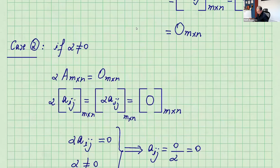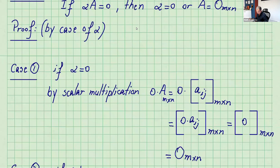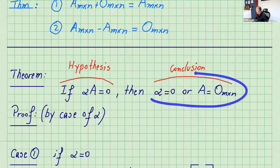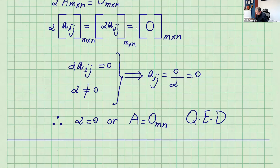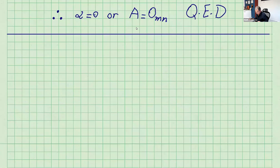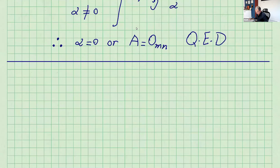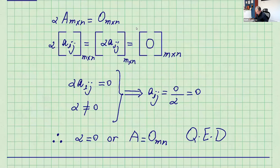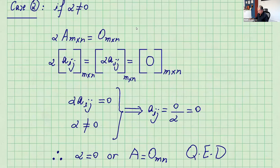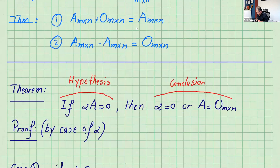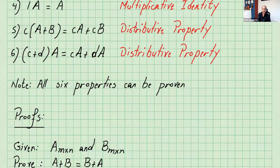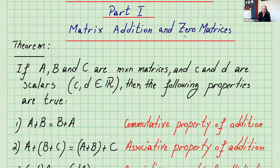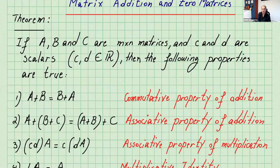That was the proof, so I think this is part one. In part two I'll cover the properties of matrix operations related to multiplication. We can stop here for this video — thank you for watching and I'll see you in the next video.